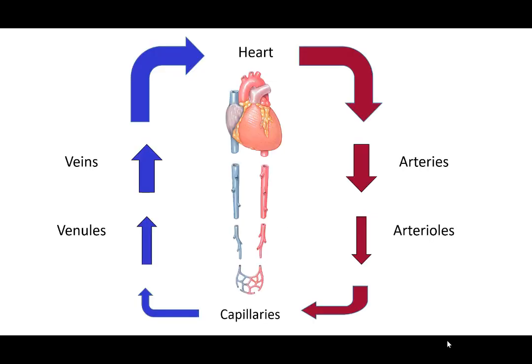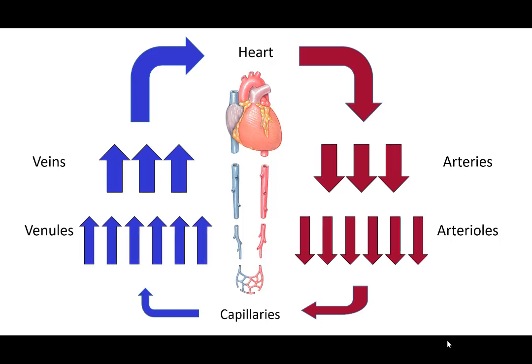Arteries are depicted in red — they are blood leaving the heart. The arteries become smaller arterioles, which then go to the capillaries where the tissues are and where we can have nutrient and oxygen exchange. Venules and veins then bring the blood back to the heart.